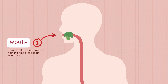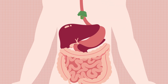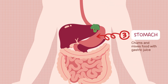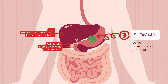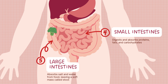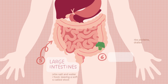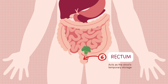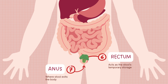Welcome to this informative video on the overview of the different parts of the digestive system. We will take you on a comprehensive tour of the different parts that make up this incredible system. The digestive system is a complex network of organs and tissues working together to break down food, extract nutrients, and eliminate waste. It plays a vital role in maintaining our overall health and well-being. Let's explore its various components.